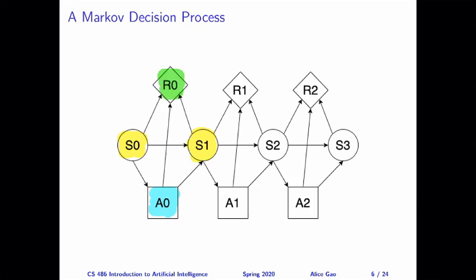You can see that this is basically a decision network. We are using the same notation, same kind of nodes. So we have the circles for representing the random variables, the rectangles for representing the decision nodes, and the diamonds for representing the utility nodes. And also, this process is going to keep going on. I'm only showing you the states up to S3, but you can imagine this keeps going. We will have new actions and new rewards for the future states as well.